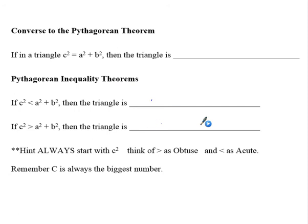So now we're going to talk about the converse of the Pythagorean theorem. Pythagorean theorem states if we have a right triangle, then we can use c squared equals a squared plus b squared. The converse of that, switch the if and the then, states if in a triangle c squared equals a squared plus b squared, then we can assume that the triangle is right.